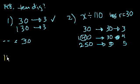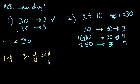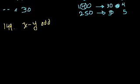So statement 1 alone is sufficient to answer this question. Question 149: if x, y, and z are positive integers, is x minus y odd? In order for this to happen, one of these has to be odd and one has to be even. If you take the difference or sum of two numbers, the only way it's going to be odd is if one is odd and one is even.